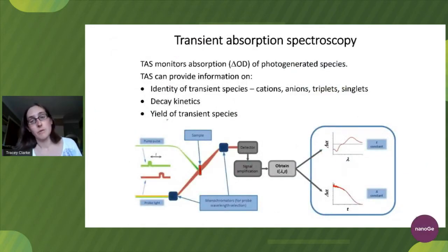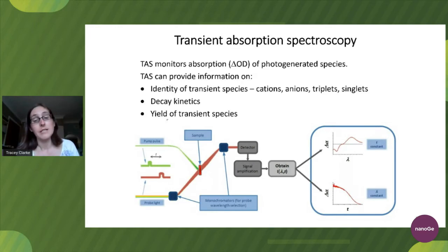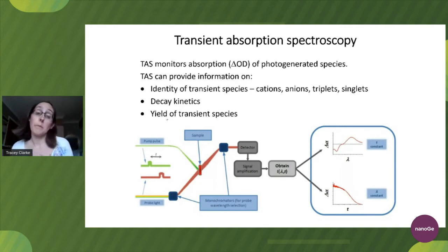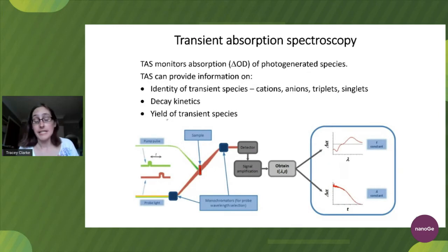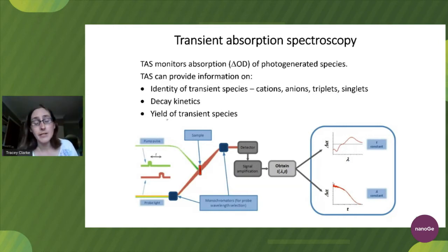I also want to introduce transient absorption spectroscopy, because this is one of the great tools we have to look at all the different species formed during photovoltaic device operation. TAS, or transient absorption spectroscopy, is an optical pump-probe technique that enables us to monitor the change in absorption or transmission of a photo-generated species. One of its great advantages is that we're able to look at the full gamut of timescales from femtoseconds all the way up to milliseconds, enabling us to look at virtually every process that happens in a solar cell.